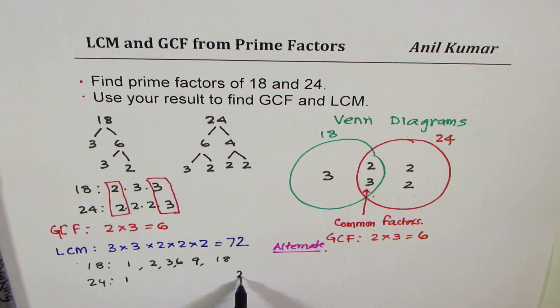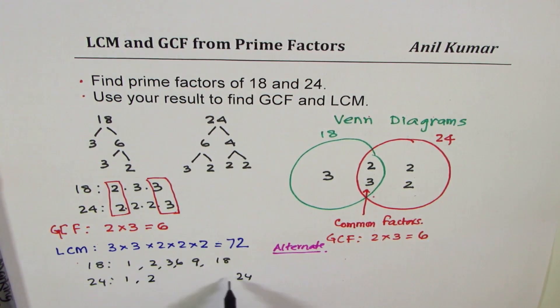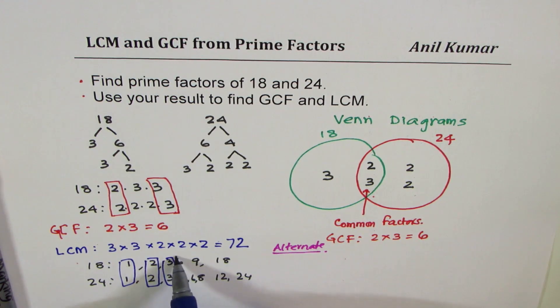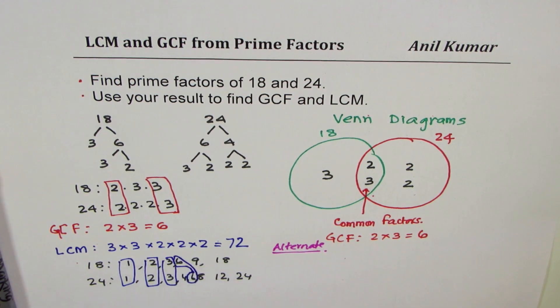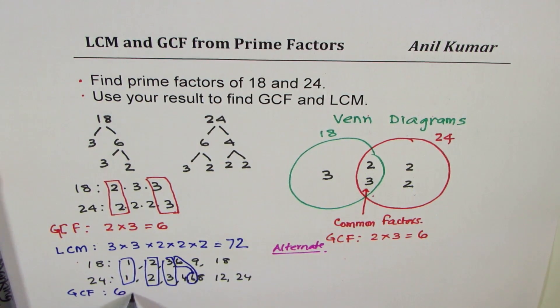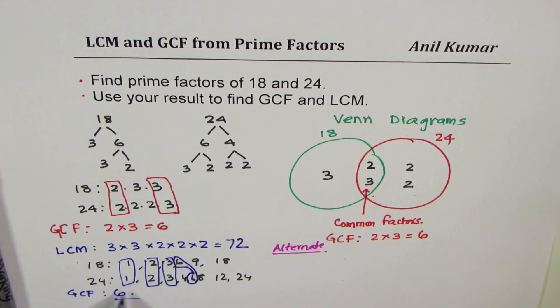Factors of 24 are 1 times 24, 2 times 12, 3 times 8, and 4 times 6. Now from this list of factors, you can circle the common factors, common factors being 1, 2, 3, and 6. Clearly the greatest common factor between 18 and 24 is 6. So that is your standard way of doing.